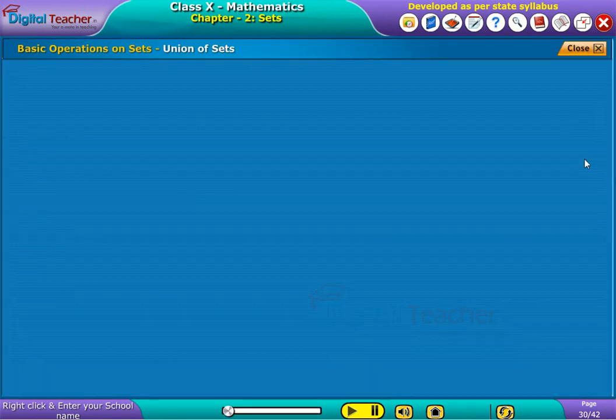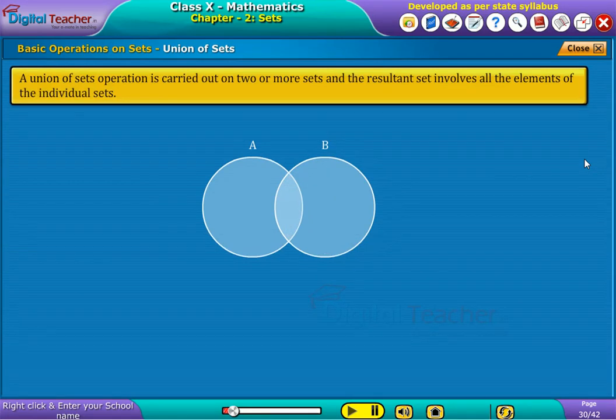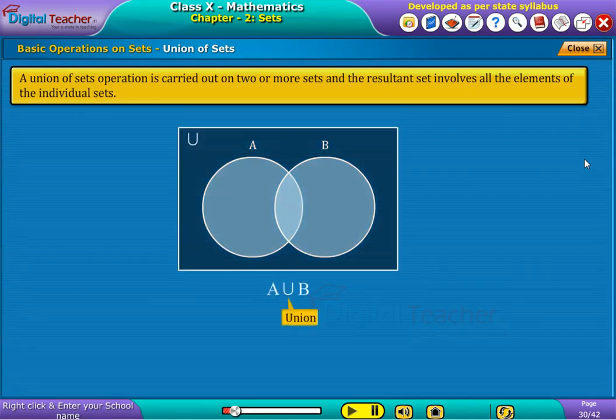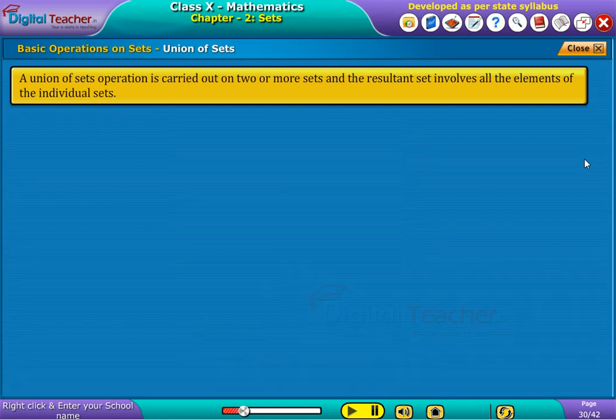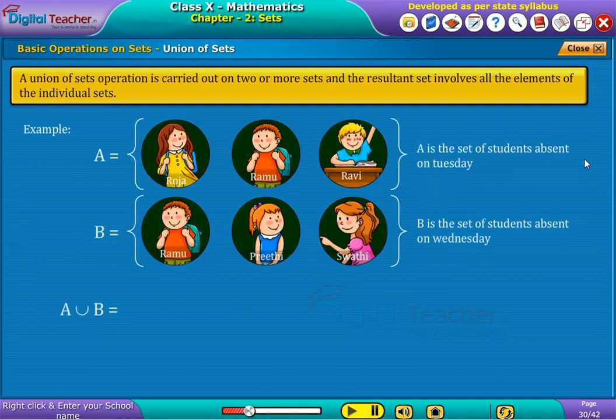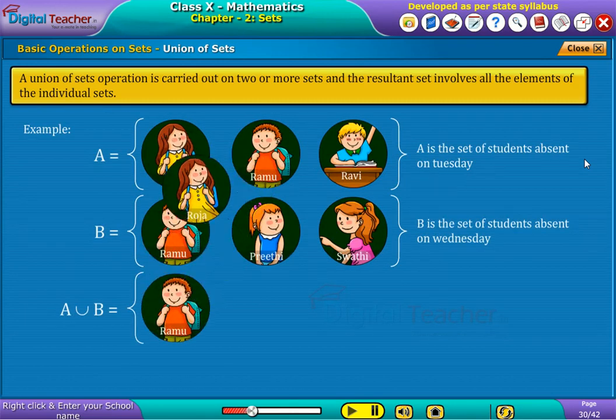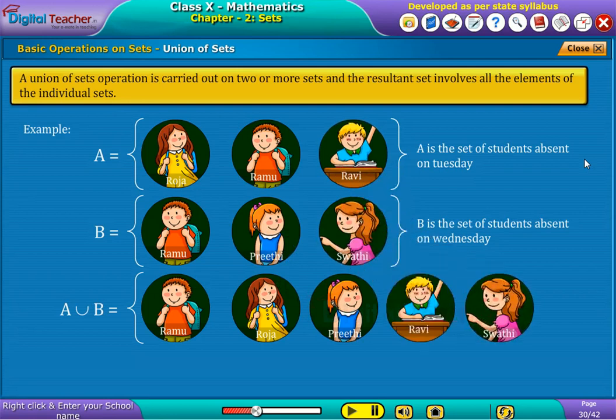Union of sets. A union of sets operation is carried out on two or more sets and the resultant set involves all the elements of the individual sets. Let A and B be the two sets. The symbol that denotes union of sets is shown on the screen along with its representation.